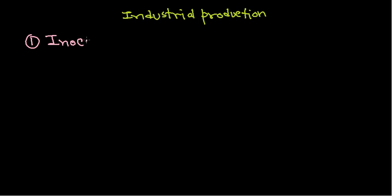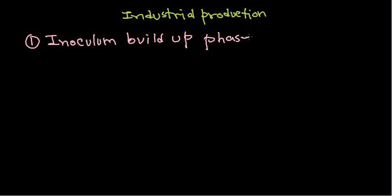The first section is the inoculum buildup phase — this is very important. You need to produce the mold culture used to make penicillin, because that is the most important thing that will give us the secondary metabolite. The second phase is the growth phase.